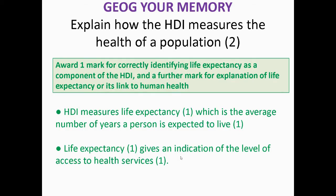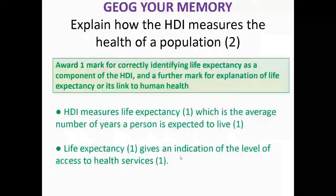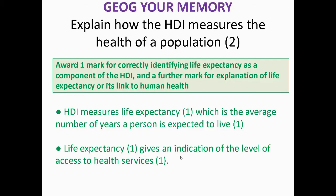Your further mark is a bit easier to get. If you get that first mark for life expectancy, then people tend to get the second mark as well. The further mark is for an explanation of life expectancy linked to human health. For example: HDI measures life expectancy — one mark — which is the average number of years a person is expected to live — second mark. Life expectancy gives an indication of the level of access to health services, how healthy a person is, how good their diet is, or their quality of life due to a lack of illness.